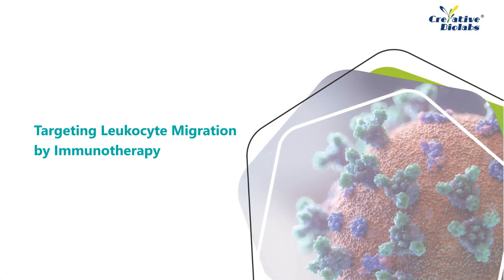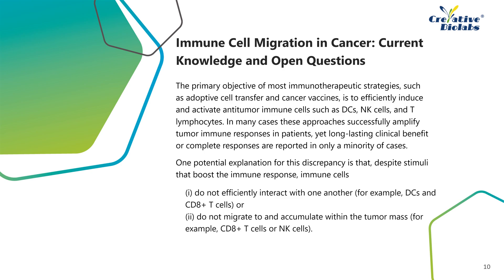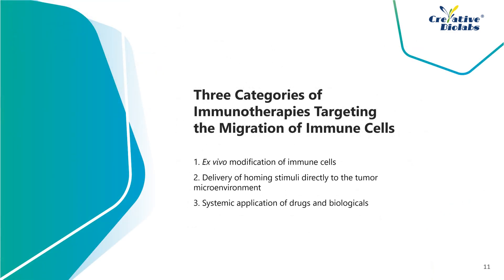There is a growing appreciation that immune contexture has a significant impact on the clinical outcome of cancer patients. Immunotherapies targeting immune cell migration can be developed to modulate the immune contexture in the tumor microenvironment. The primary objective of most immunotherapeutic strategies — such as adoptive cell transfer and cancer vaccines — is to efficiently induce and activate anti-tumor immune cells. In many cases these approaches successfully amplify tumor immune responses, yet long-lasting clinical benefit is reported in only a minority of cases. One potential explanation is that despite stimuli that boost the immune response, immune cells do not efficiently interact with one another or do not migrate to and accumulate within the tumor mass, making novel approaches to overcome immune migratory limitations urgently needed.